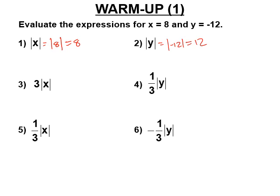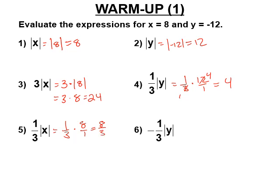Number three: that's three times the absolute value of x. Absolute values are grouping symbols, just like parentheses, so you do them first. This is one third times the absolute value of negative 12, which is 12 — canceling, we get four. One third times the absolute value of 8 is 8, giving eight thirds, or two and two thirds. The last one is negative one third times the absolute value of negative 12, which is positive 12, so you might think the answer is positive — but it's negative four, because there is one negative in that problem.